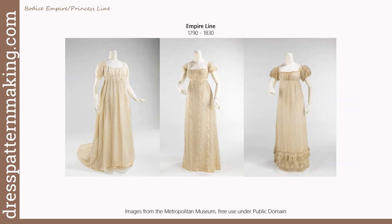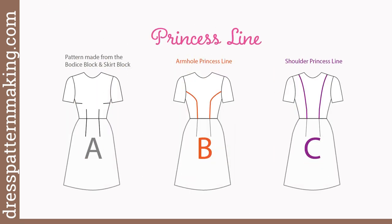The empire line is flattering for several different figures — not only for wide hips and narrow shoulders or short legs, but also for those with thicker waists as it emphasizes the bust and hides the waist. It elongates the frame, so it's good for shorter women in particular, and for women who want to de-emphasize their waist or hips. As shown in the images, it also looks good on thin women.